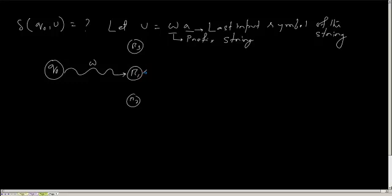From states R1, R2, R3, the automata figures out it must consume input symbol A. Suppose from R1 it reaches P1. Then it checks: is there any empty transition from P1? From each of R1, R2, R3, I apply the transition function with A to reach P1, P2, P3, and then check for empty transitions. Those final reachable states become my result.